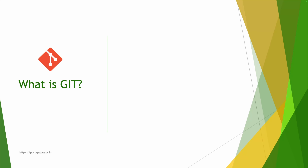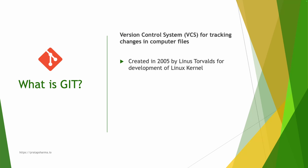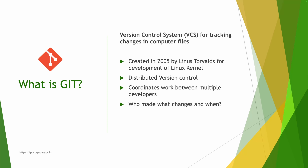Let's start with what is Git. Git is a version control system for tracking changes in computer files. It was created in 2005 by Linus Torvalds for development of the Linux kernel. It is a distributed version control system because multiple developers work on their local machines and we also have a repository in a Git server. It helps coordinate work between multiple developers, tracks who made what changes and when, allows reverting back at any time, and has both a local and a remote repository.